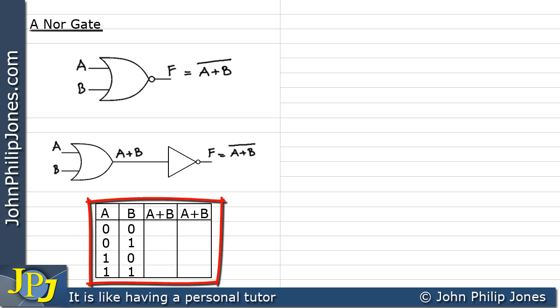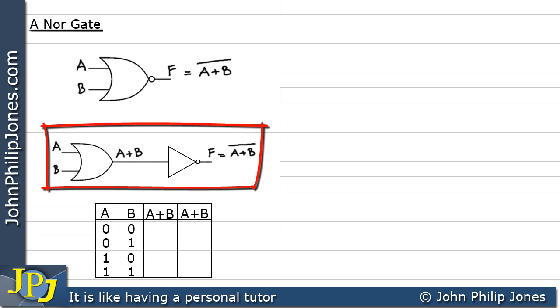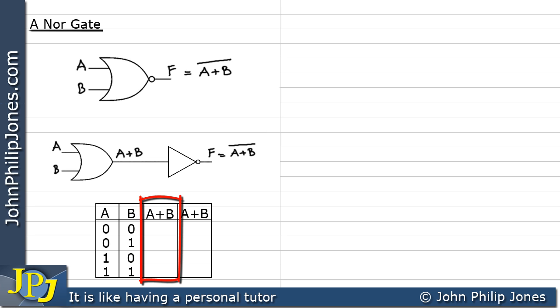Let's complete the truth table for this particular combinational logic circuit. This column here will represent the output at this position, i.e. the output from the OR gate. Now you need to remind yourself about the truth table for an OR gate. It is in fact a 0 when the two inputs are a 0 and it's a 1 for all other conditions for the input combinations.